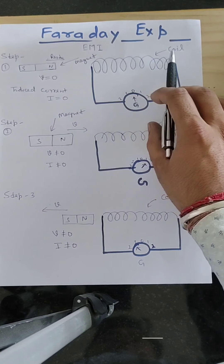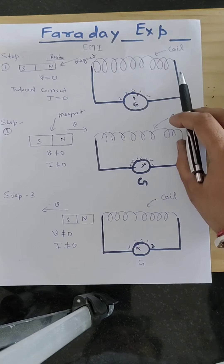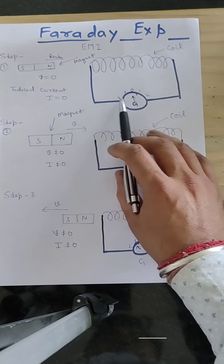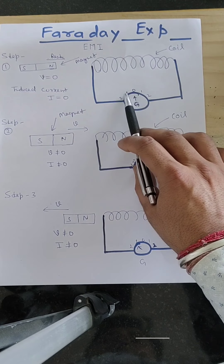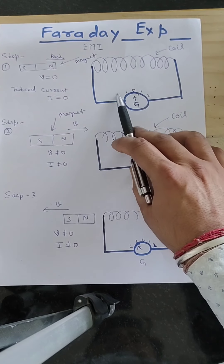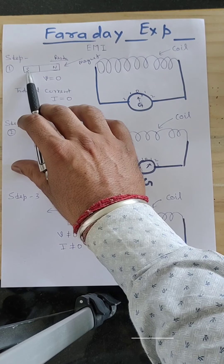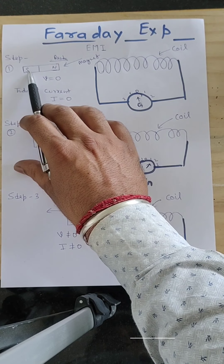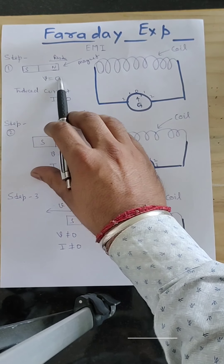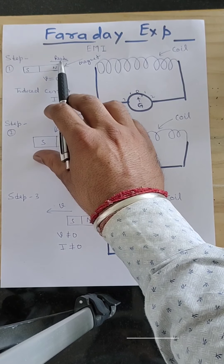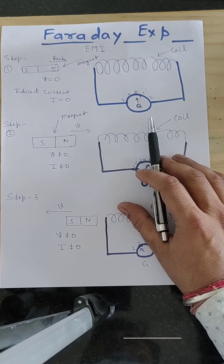This round shape is a coil, which is made by some type of conductor. And this is the wire, which is connected to a galvanometer. The galvanometer has an initial value of 0. At some distance, the magnet is placed here. The magnet has a south pole and a north pole. Initially, the magnet has velocity 0, meaning it is at rest. Faraday observed a very interesting phenomenon during this experiment.